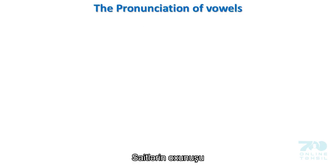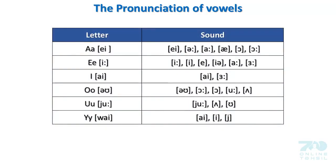The pronunciation of vowels. Letter A can sound as: A, E, A, A, O. Letter E can sound as: E. Letter I can sound as: I, E. Letter O can sound as: O. Letter U can sound as: U, A. Letter Y can sound as: I.